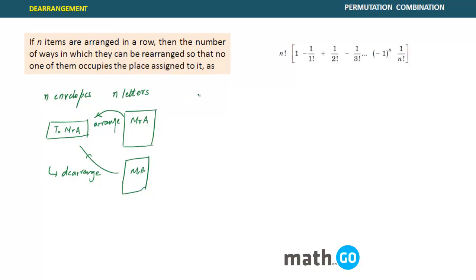So if there are five letters and you want to de-arrange them, this is the formula that you people have to use - this is generalized for n things. So if I have to talk about that five letters are there, and there are five envelopes, and they are de-arranged, that means none of them got into the correct envelope.